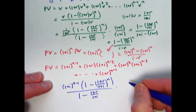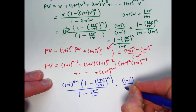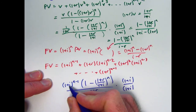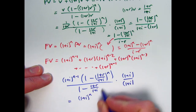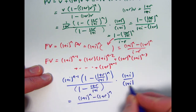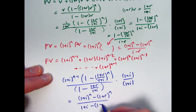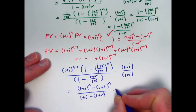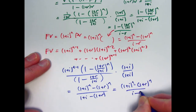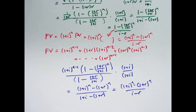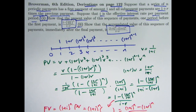Multiplying the top and bottom by (1 plus i), I get (1 plus i) to the n distributed through, which cancels with the (1 plus i) to the n in the denominator. Distributing (1 plus i) through the bottom as well, the ones cancel once again, and I'm left with the same answer: (1 plus r) to the n over i minus r. This is a formula you could memorize if you want, but it's more important to memorize the formula for the sum of a finite geometric series.